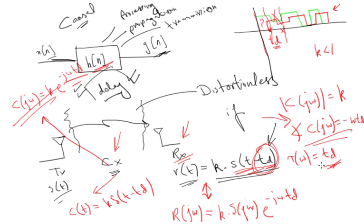The magnitude response of the channel equals k, which is constant, and the phase response equals minus ω·td, which is linear phase. The group delay will be td, which is constant. Whenever you have linear phase and constant group delay, you say your system is a linear phase system.